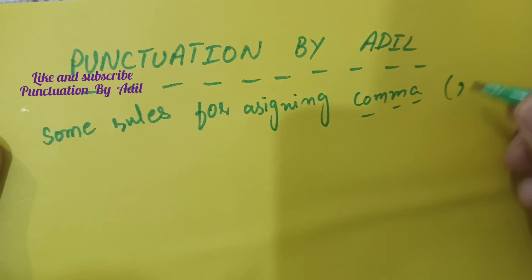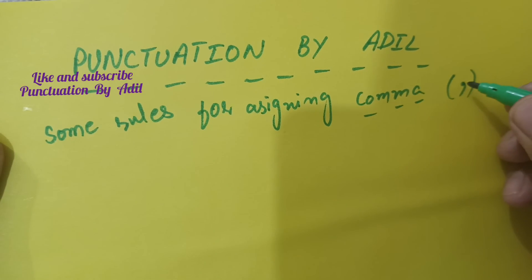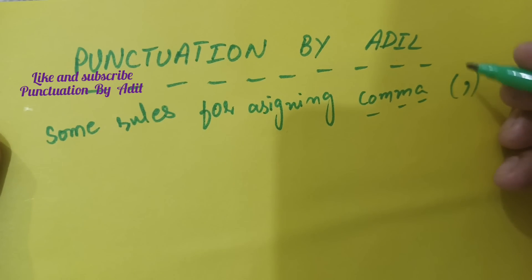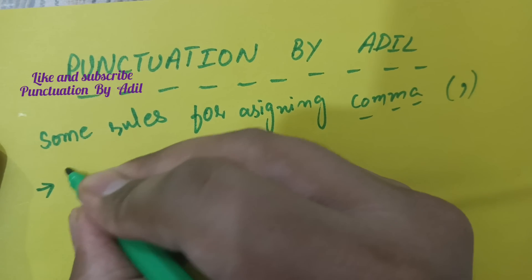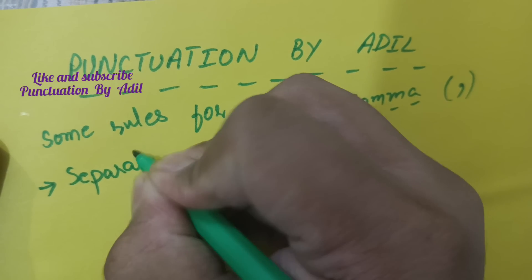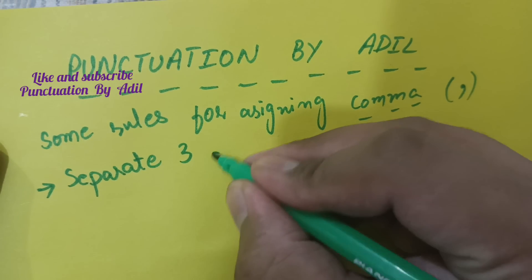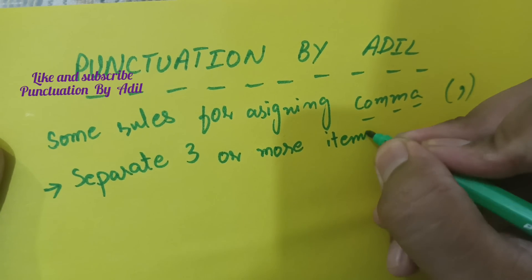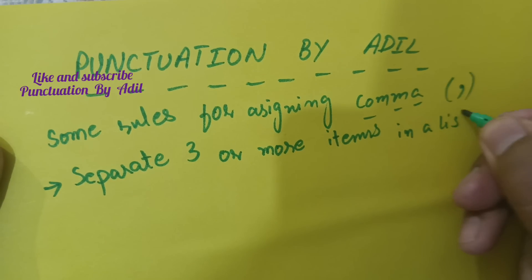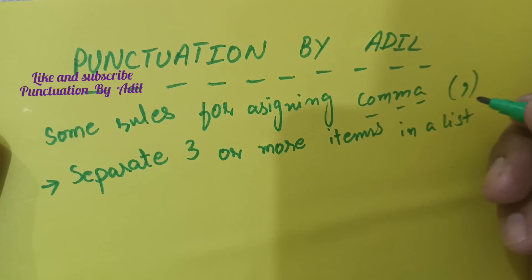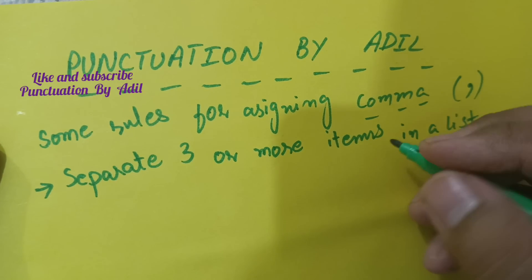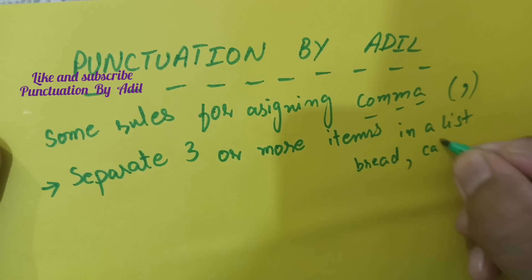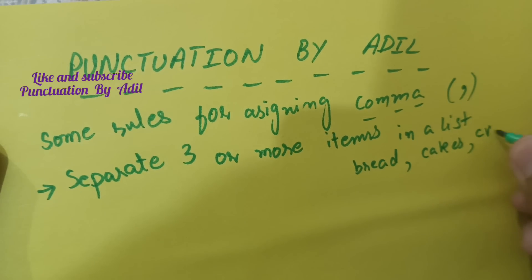A comma is basically represented by this symbol, which I have illustrated within the brackets. The first rule is that a comma is used to separate three or more items in a list. A list is basically a group of words, so we place a comma after each word to separate them from each other. For example: bread, cake, cream, etc.